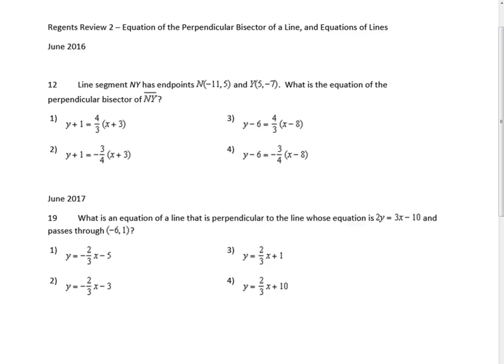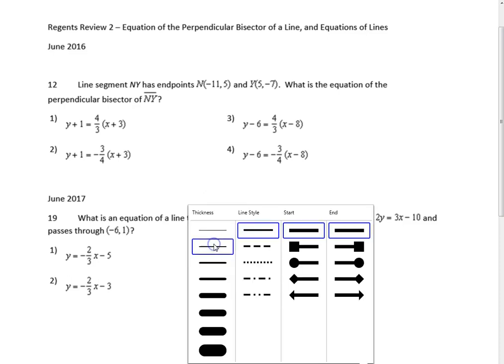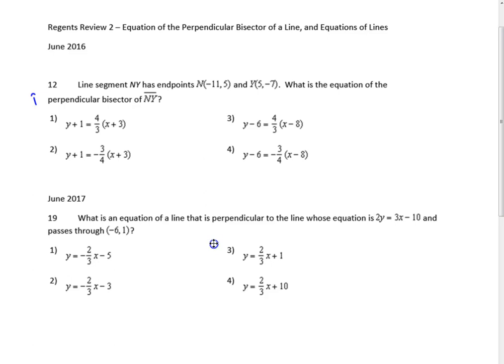Let's begin with question 12 from June 2016. Line segment NY has endpoints N(-11, 5) and Y(5, -7). What is the equation of the perpendicular bisector of NY? We have a little song: ABC, easy as 1, 2, 3, easy as write the equation of the perpendicular bisector of the line.